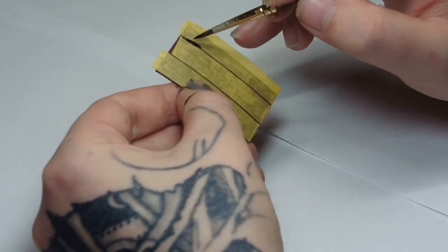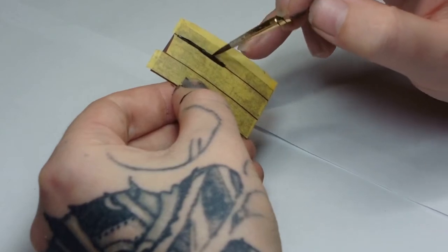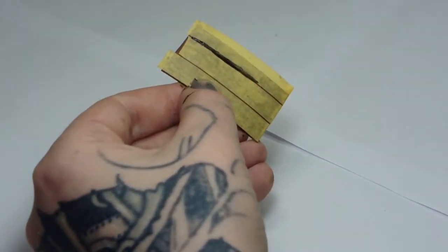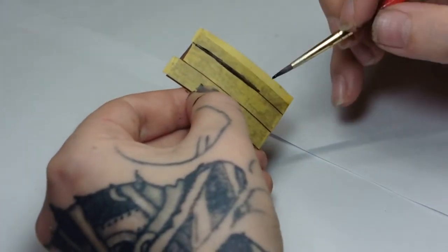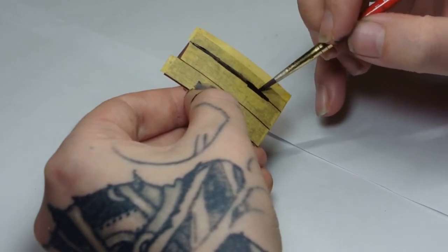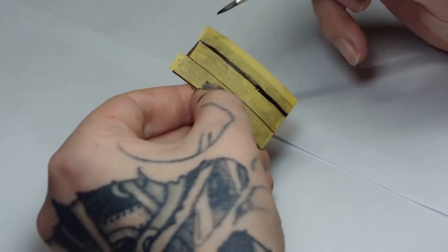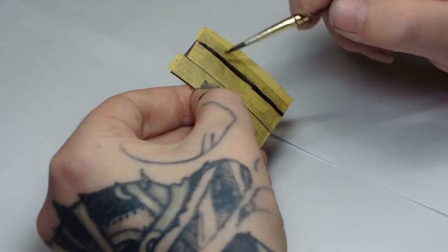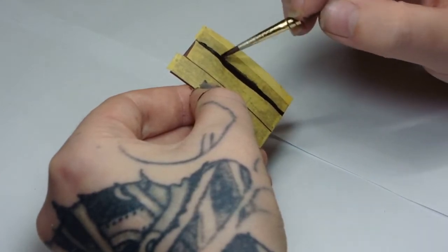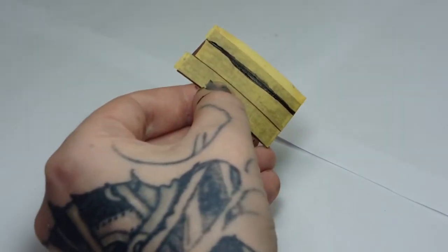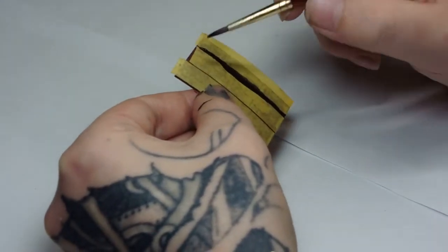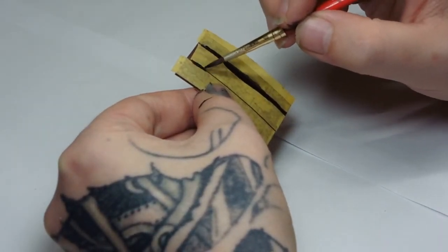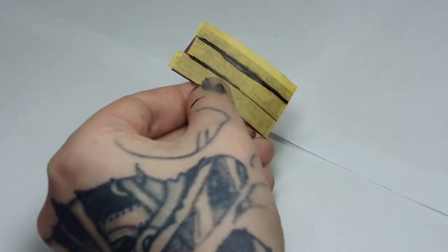Then just using it like a stencil really and just going over that with a black. You don't have to be too careful. The technique I'll show you after this, I'll point out the flaws in doing it this way with a brush. If I'd done it with an airbrush, nothing would have got underneath of that tape. The bristles are what's forcing the paint under. So if you've got an airbrush and you're doing this, I'd recommend using that instead.